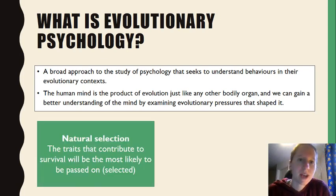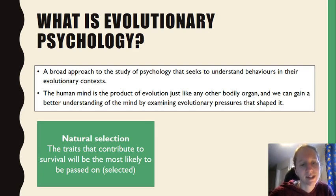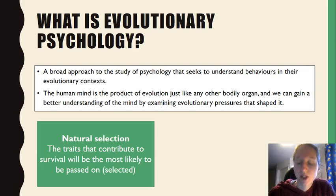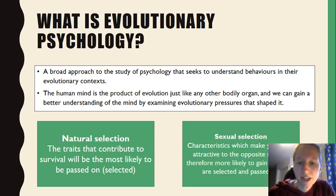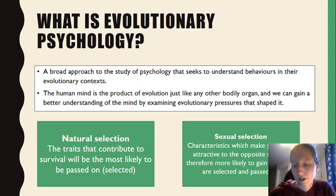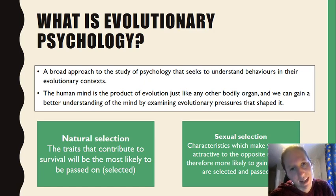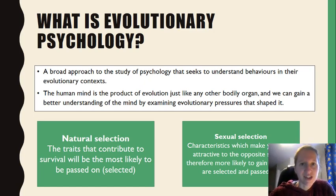Two things we look at as part of that: natural selection, which is that traits that contribute to survival are most likely to be passed on; and sexual selection — characteristics that make you more attractive to the opposite sex, making you more likely to get a partner, so those characteristics are selected and passed on. It's advantageous to have a partner because then your genes can be passed down to the next generation.